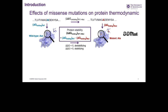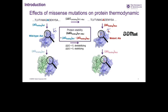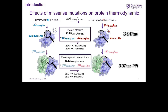Moving towards protein-protein interactions: when a protein binds to a partner protein it releases the binding free energy delta G binding, and the difference between the wild type and the mutant determines the effects of mutations on protein-protein binding affinity. When delta delta G is less than zero the mutation decreases the affinity, and when it's greater than zero it increases the affinity.